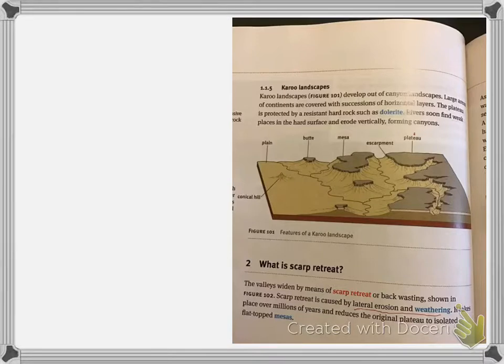What's important to understand is your plateau right there, and then you get your mesa, you can see that right there. So there's my mesa, and then I have a butte, and then I have a conical hill.